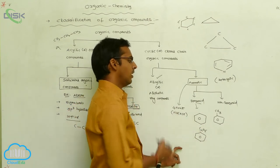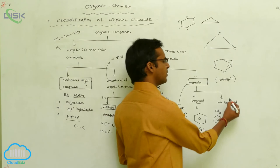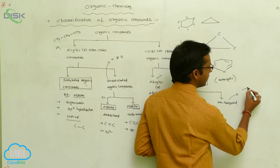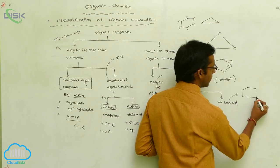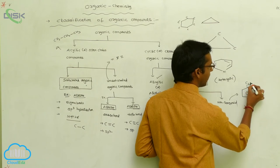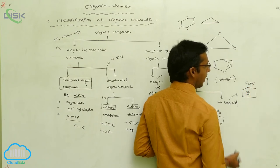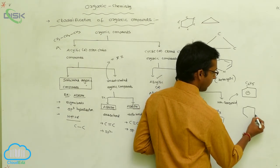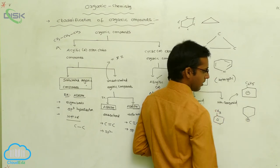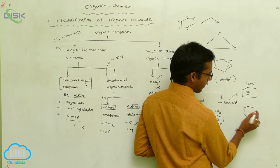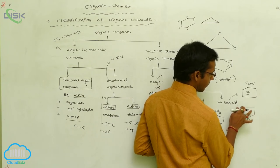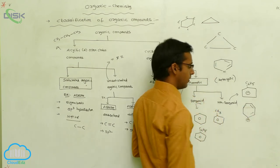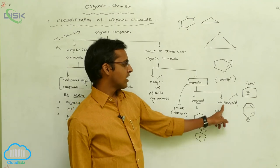Non-benzenoid compounds include, for example, cyclopentadienyl cation or anion, which is a five-membered ring, and the tropylium cation, which is a seven-membered ring. These are examples of non-benzenoid rings.